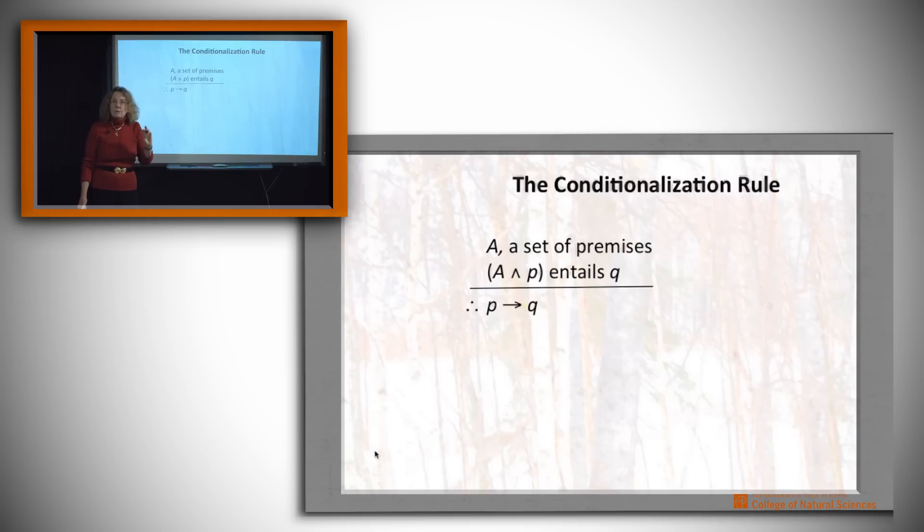then what we're allowed to conclude is not Q all by itself, but that P implies Q. Now, obviously, it's really P and A imply Q, but remember that we never assert explicitly our premises that's taken in the background. So we have that P implies Q. All right, so now let's see if we can make that happen.